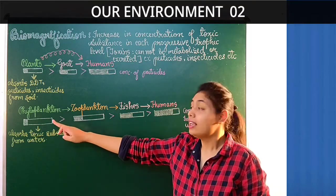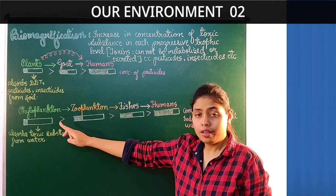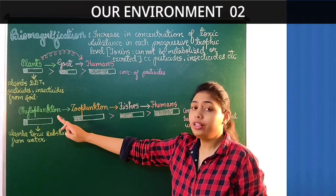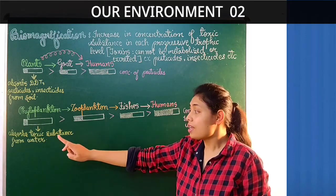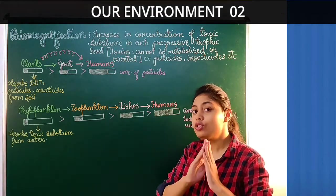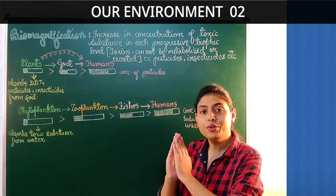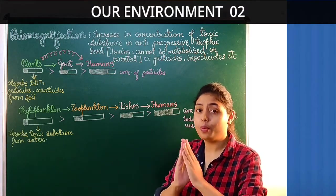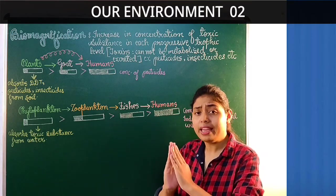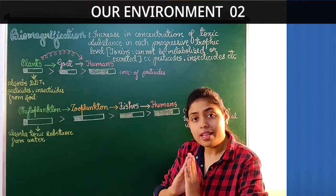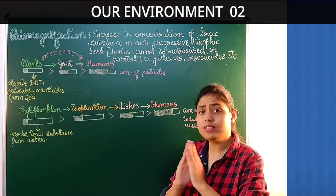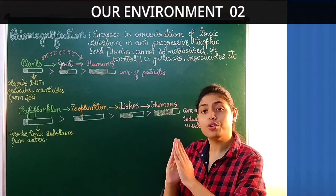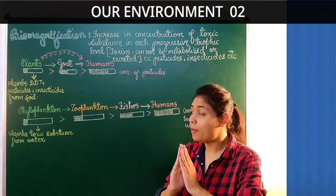Phytoplanktons — the word 'phyto' means plant — are unicellular organisms which prepare their food by photosynthesis. During photosynthesis, phytoplanktons absorb toxic substances from water. These toxic substances enter the water body through fields or industrial chemical waste. Pesticides and insecticides sprayed on crop fields flow through rain water into nearby water bodies. Similarly, many industries and factories dump their chemical waste directly into water. These chemicals from the water are then absorbed by phytoplanktons.